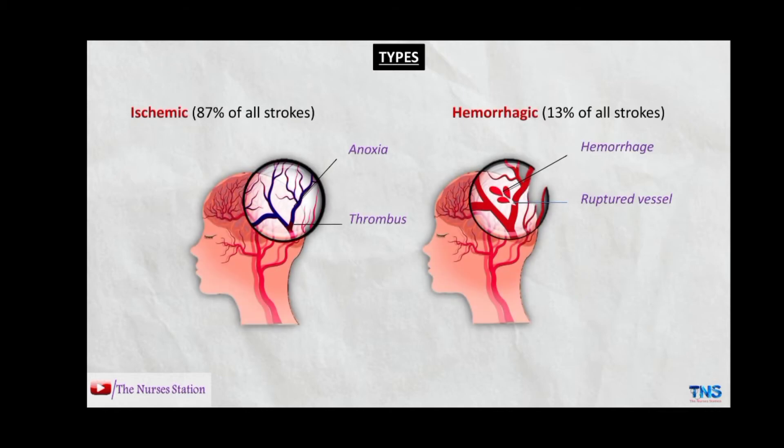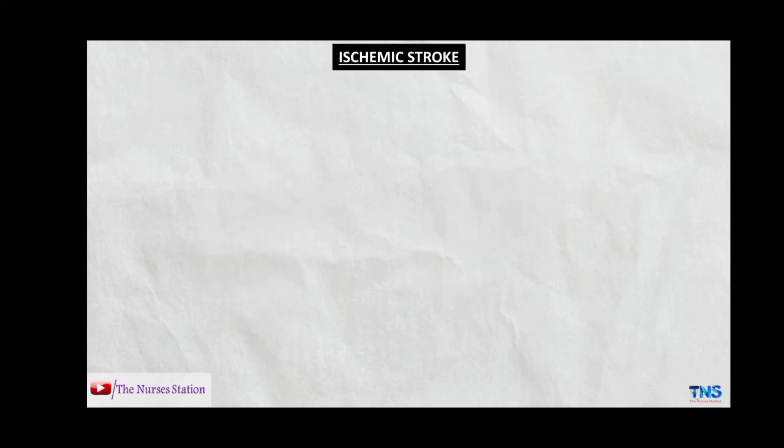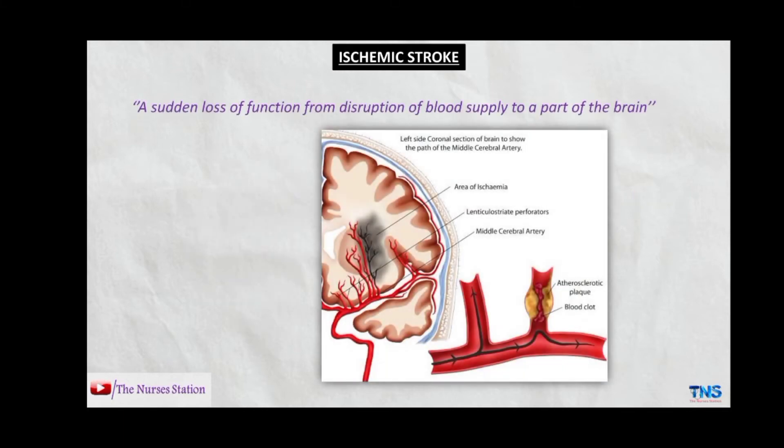There are mainly two types of stroke. The first is the ischemic stroke, which comprises 87% of all stroke cases, and the second is the hemorrhagic stroke, which accounts for 13% of all stroke cases. Ischemic stroke is the sudden loss of function from disruption of blood supply to a part of the brain. It happens when the brain's blood vessels become narrowed or blocked, causing severely reduced blood flow — that is, ischemia.